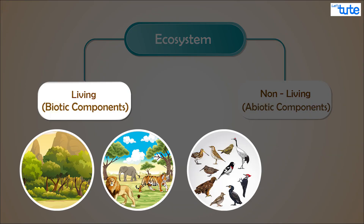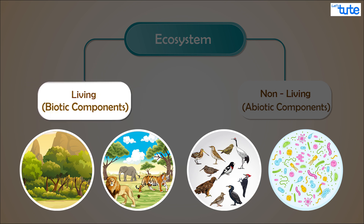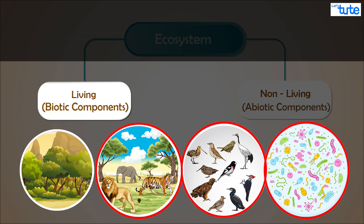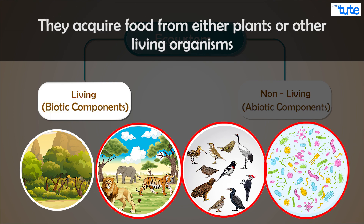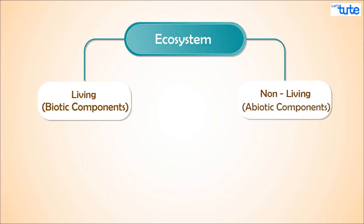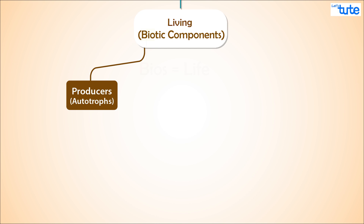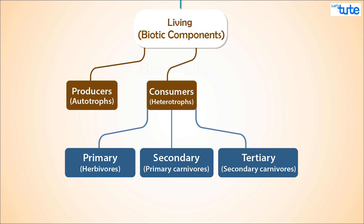Plants, animals, birds, and microorganisms are part of the biotic components. But if I ask you who amongst them can prepare their own food? Yes, plants. What about others? They acquire food from either plants or other living organisms. So we can classify these biotic components further into two types: the ones which produce their own food are called producers or autotrophs, and all other organisms that depend on other organisms for their food are called consumers or heterotrophs.